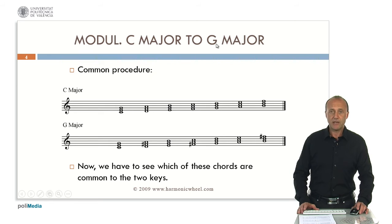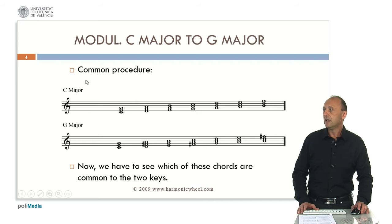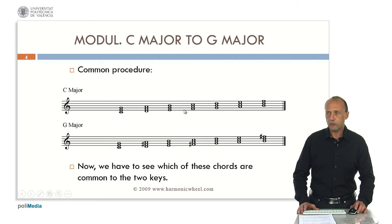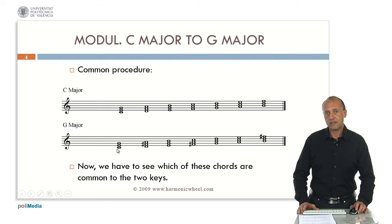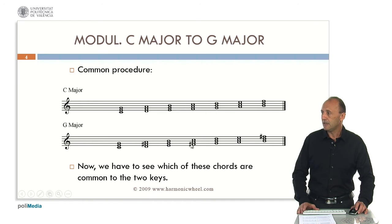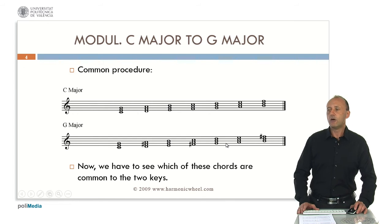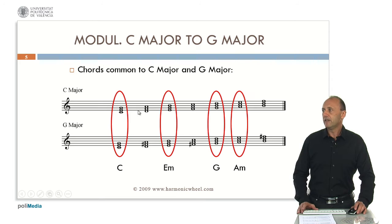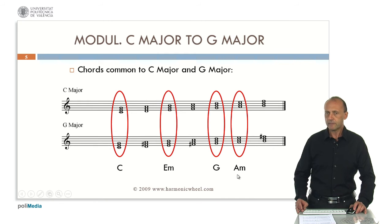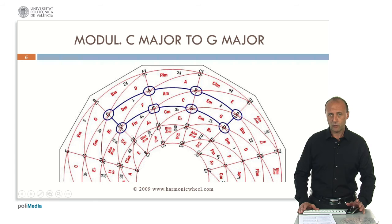If we want to modulate from C major to G major, we can use the traditional procedure, which consists in first writing the C major scale and then adding two thirds on every note, thus obtaining the triad chords in C major. Then we write the G major scale starting with note C in order to compare: C, D, E, F sharp, G, A, B, and then we add two thirds on every note, thus obtaining the triad chords in G major. We can verify that there are four common chords or four pivot chords, which are C major, E minor, G major, and A minor. We can obtain these four chords with the harmonic wheel in a very direct way.